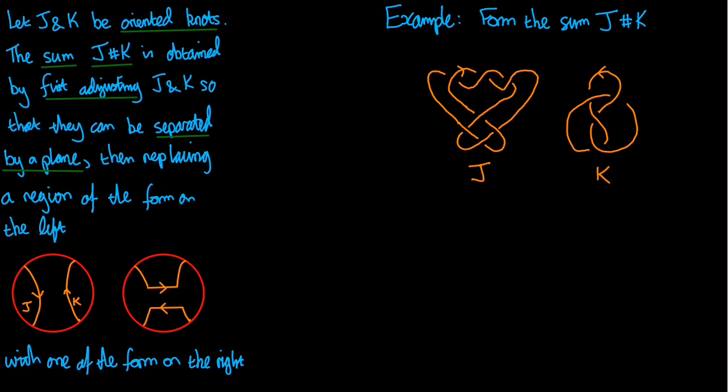So I make sure that they can be separated by a plane and then I replace a region that looks like this one on the left here with a region that looks like this one on the right. So what I do is I look for a place where J and K pass each other by close by with J going one way and K going the other way.